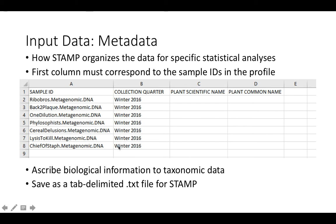Notice how all of these samples here belong to Winter 2016 in the category 'collection quarter.' The metadata file is how you will ascribe biological information to your taxonomic data. So you can organize your samples according to the pH from which they came from, or how much moisture was in that plot or sample. Just realize that for STAMP, describing categories such as high, medium, or low, or 1 to 5, 6 to 10, may be more helpful than giving discrete numbers for this metadata file. Once you are ready, you can save this as a tab-delimited text file for STAMP.